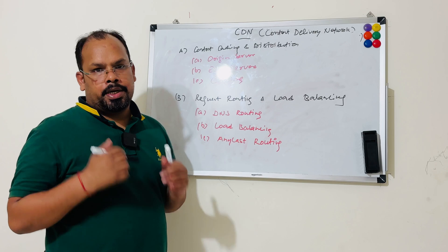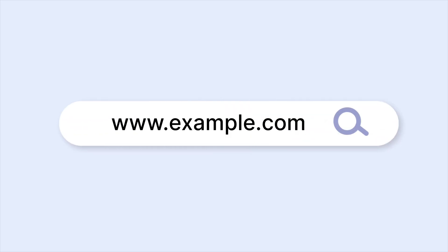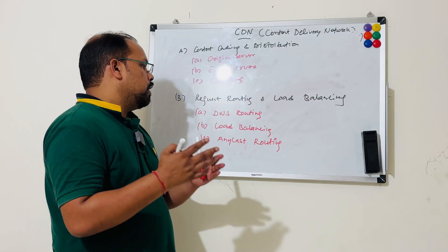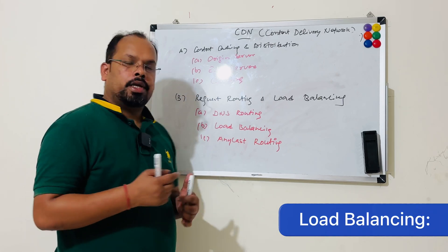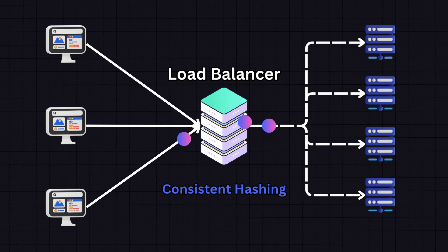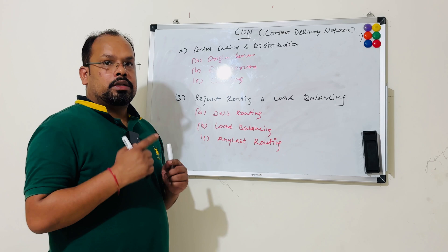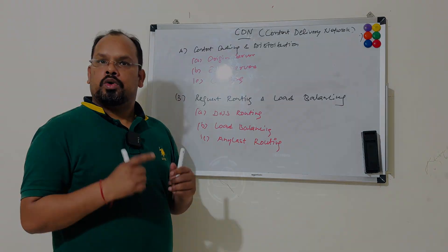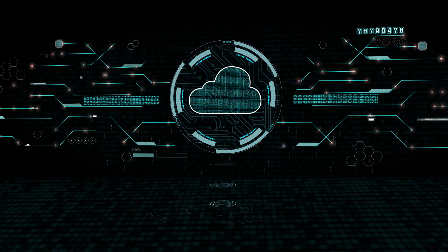CDN utilizes DNS service to identify the IP address of a domain and redirect the request to the nearest edge server. Second is load balancing — CDN also performs load balancing so that no single edge server is overwhelmed with a lot of requests. In case any edge server fails, the origin server serves as the main fallback and serves content to the end user.